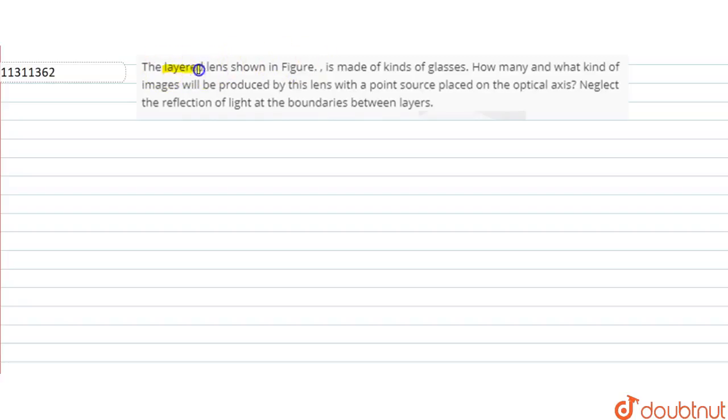In this question, there is a layered lens which is made from different materials. We are asked what kind of images will be produced by the lens with a point source placed on the optical axis. Neglect the reflection at the boundaries between layers.